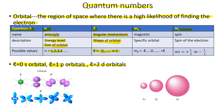We can put n and l together to see that the 1s, 2s, and 3s orbitals all have the same spherical shape since they're all s orbitals. However, as you go up in energy level, the orbitals get bigger because on average the electron will be farther away from the nucleus.